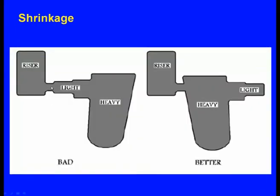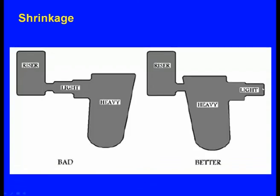But once the thin section solidifies, the molten metal cannot feed the casting. The heavy section is still in liquid state, but the thin section has already solidified, so the riser cannot feed the heavy section — ultimately there will be shrinkage defect. The solution is to change the position of the riser: keep the riser away from the thin section, placed on the other side. Then the thin section solidifies first, followed by the next, and the heavy section solidifies last while the riser continuously feeds it, preventing the shrinkage defect.